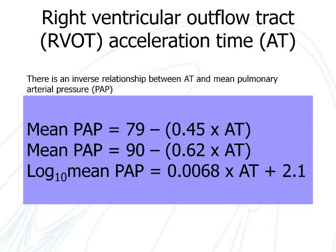However, these equations are not commonly used in clinical practice, as they have been superseded by the use of tricuspid regurgitant velocity to calculate pulmonary artery pressure. However, acceleration time may be useful in cases where tricuspid velocity cannot be measured, particularly at diagnosis.